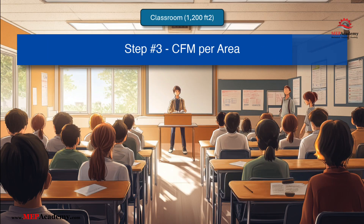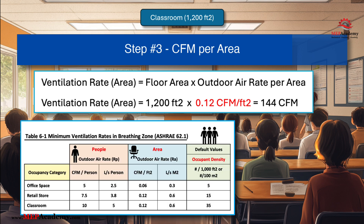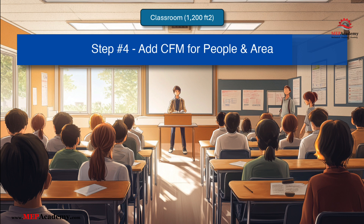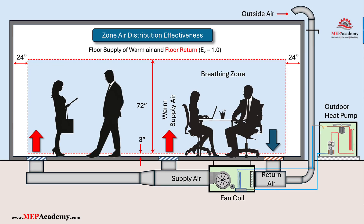Step 3: Ventilation rate (area) = 1,200 sq ft × 0.12 CFM per sq ft = 144 CFM. Step 4: Total ventilation rate = 420 CFM (people) + 144 CFM (area) = 564 CFM. For this classroom, the required outdoor air ventilation rate is 564 CFM.